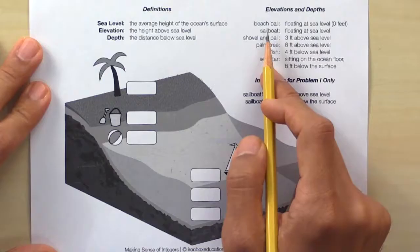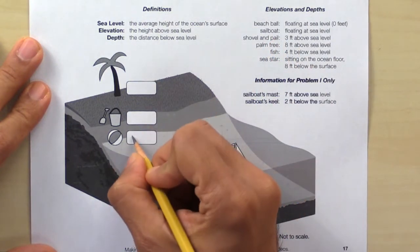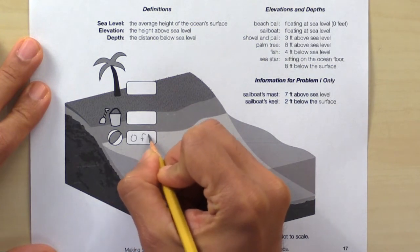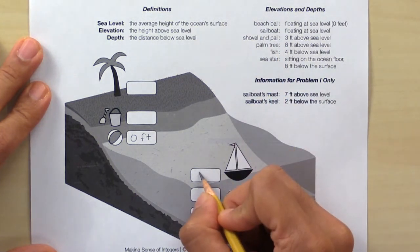Let's fill out the information. The beach ball is floating at sea level, or 0 feet, so write 0 feet for the beach ball. The sailboat is floating at sea level as well, so that's 0 feet.